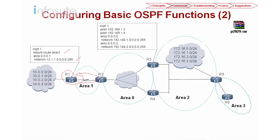On R3, they are also doing the peer 192.168.1.2 and 1.4. Why do they need to do 1.2 and 1.4? Because on the FR, they are using NBMA — non-broadcast mode. So R3 to R2, R2 to R4, you need to perform the peering and also perform the advertisement as well as for R5.